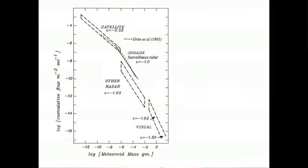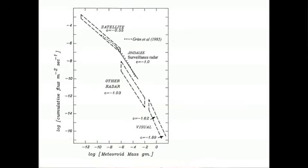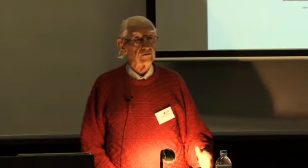The next slide summarises the flux of meteorite particles — observed at the top with satellites, at the bottom visually, and in the middle with radars. The observations from the radars we'd been operating, until we introduced the two megahertz system, showed a gap. But if you take the low-frequency data — the word Jindalee there — you then have essentially a continuum of flux against mass.